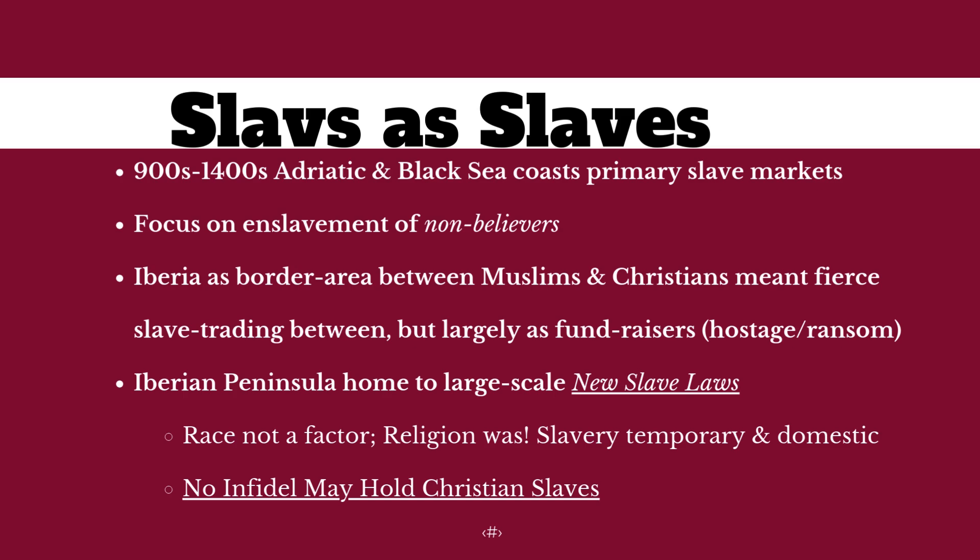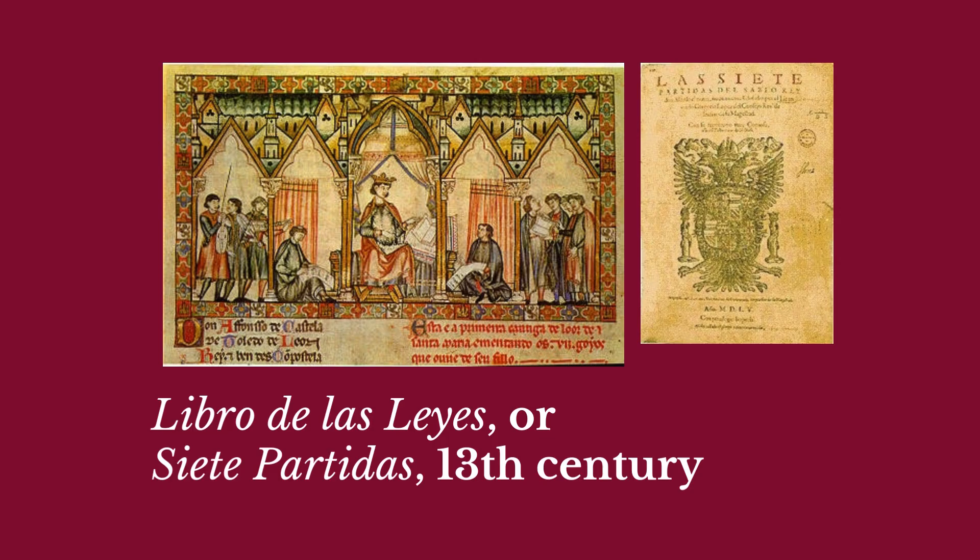Slaves are actually being more and more protected — not serfs, but slaves — by a series of laws passed in the Iberian Peninsula, in what is now Spain, called the seven-part laws. Included in those laws is an important one: no infidel may hold Christian slaves. I mention this because when we get to the New World and the early slave laws of the Virginia colony, we'll see a similar law — which in the Americas will come to mean black people cannot hold white people, even though some of these black people are Christian and some of these white people may not be Christian.